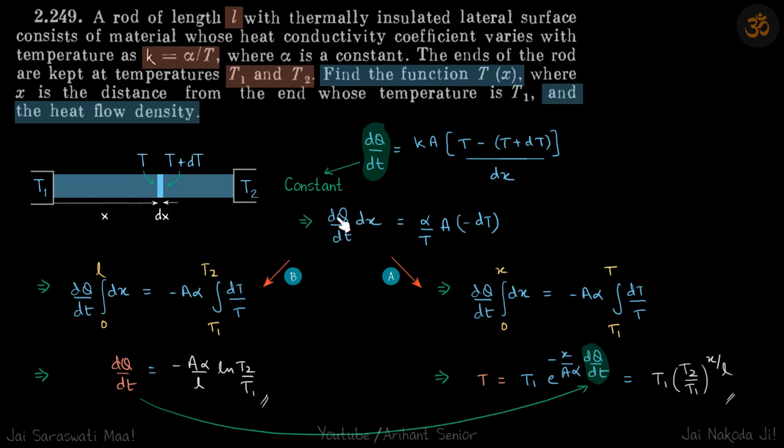This comes to be dQ/dt times dx equal to alpha by T times A times minus dT.